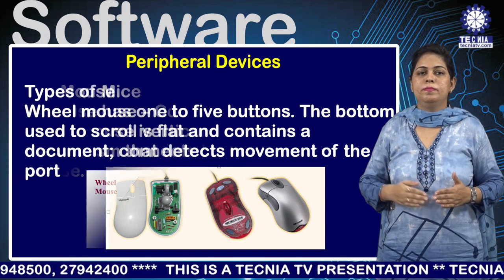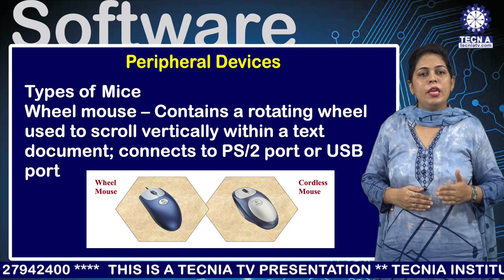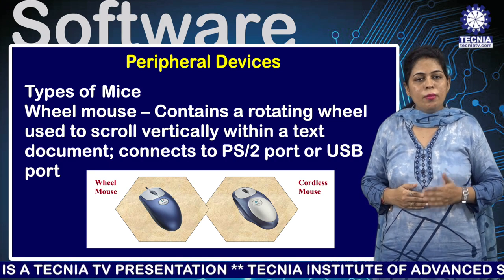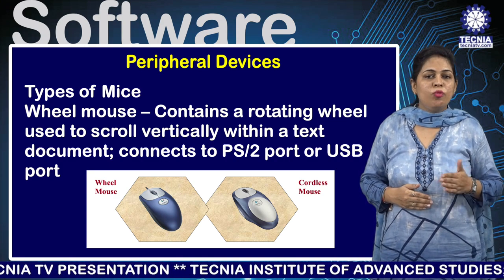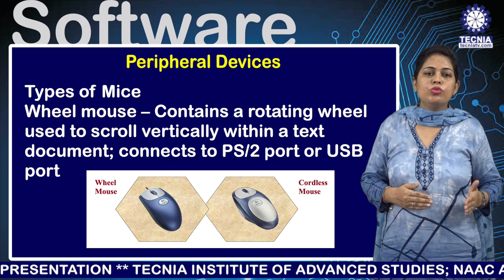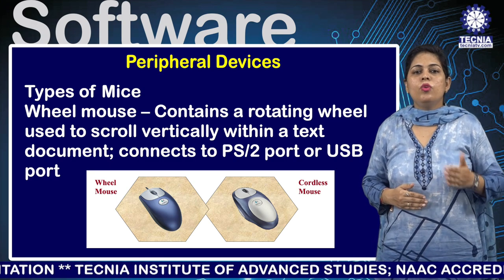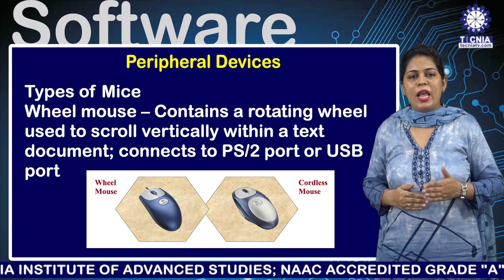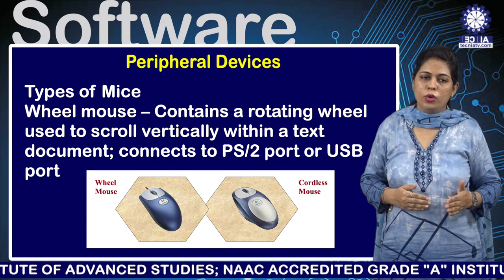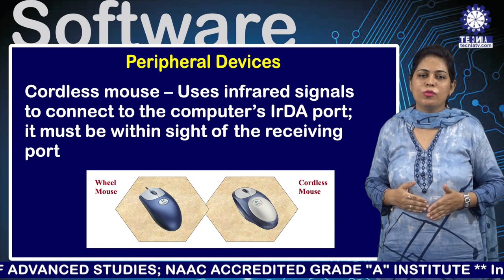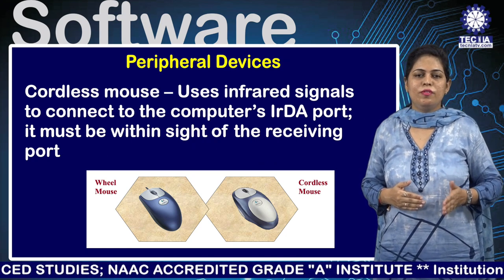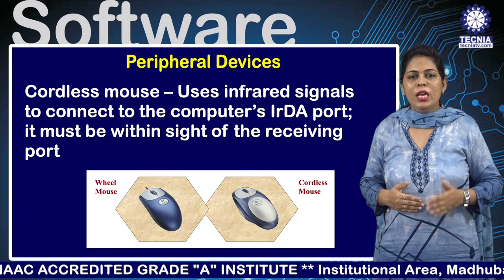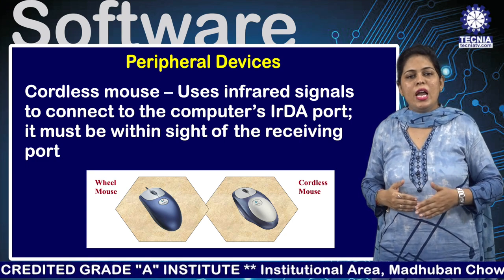Types of mice include the wheel mouse and the cordless mouse. A wheel mouse contains a rotating wheel used to scroll vertically within a text document and connects to a PS/2 port or USB port. A cordless mouse uses infrared signals to connect to the computer via an IrDA port and must be within sight of the receiving port.